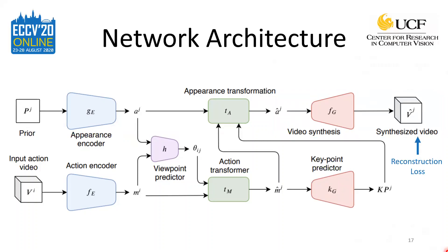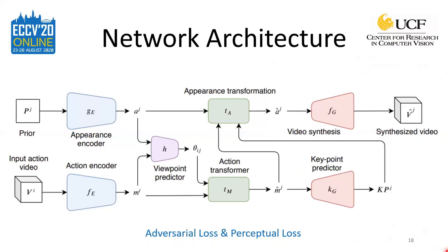The video synthesis contributes a reconstruction loss computed as the mean squared error between the synthesized video and the ground truth video. We also use adversarial loss and perceptual loss to improve network performance. To compute the adversarial loss, we use a 3D convolution-based discriminator that predicts whether the synthesized video is real or not, using the standard GAN framework to train the model. The perceptual loss is determined by extracting a feature encoding of the predicted video and the ground truth video from a pre-trained VGG16 network and computing the mean squared error between the two encodings. All four losses mentioned are used in the training of the model.